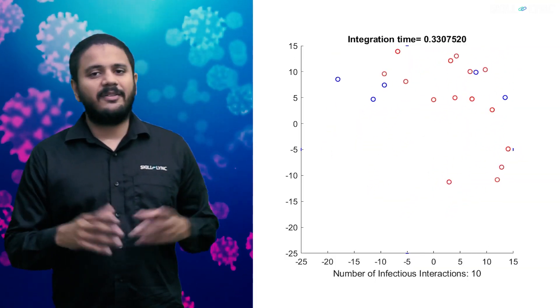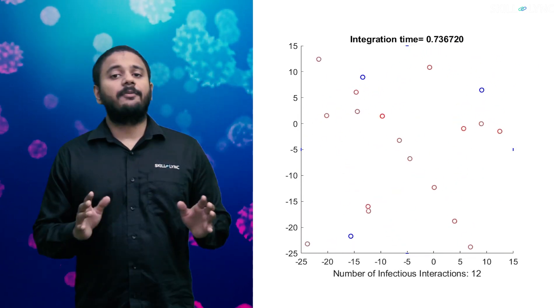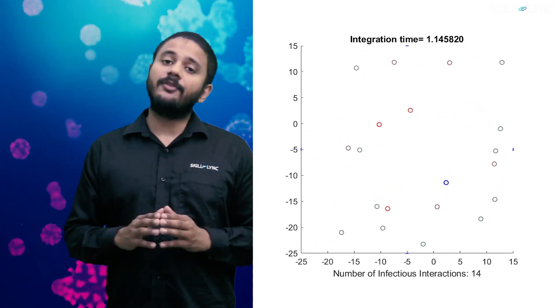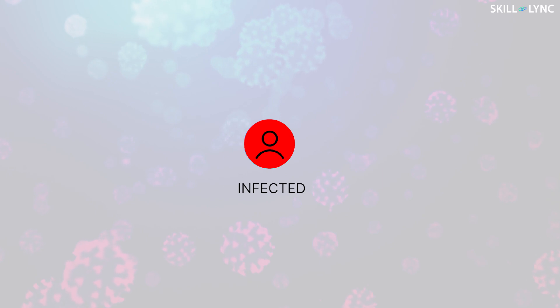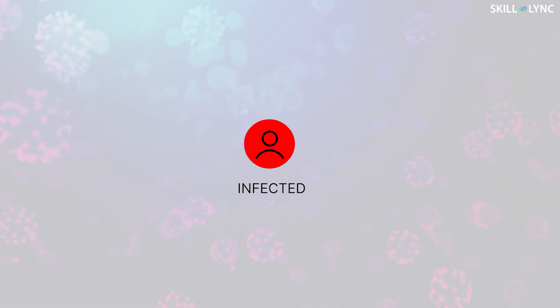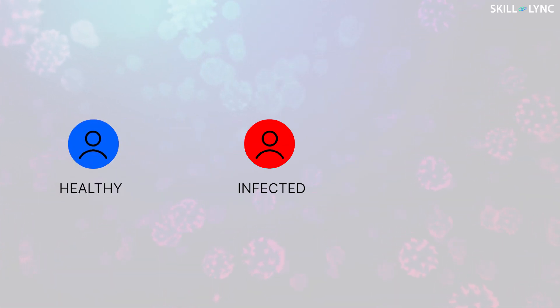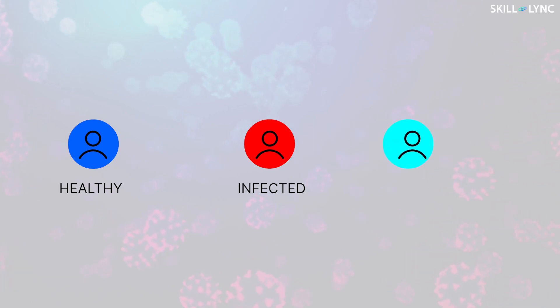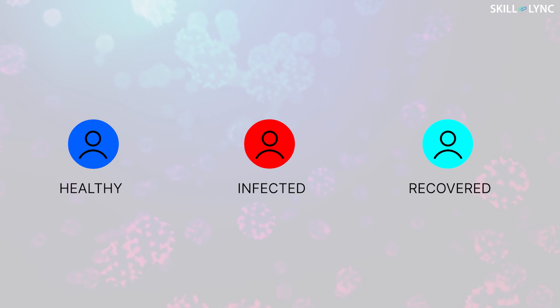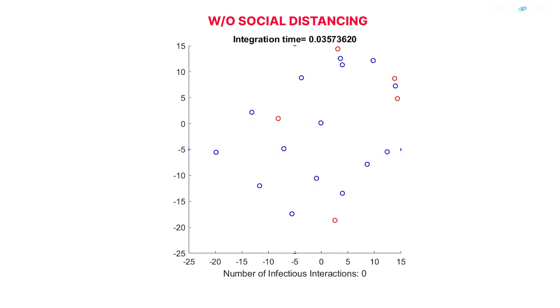Hey guys, hope you're all doing good and welcome to a new video. In this video we are going to show you the benefits of social distancing by performing simple particle simulations. You will be watching simulations where red colored circles represent people with coronavirus infection, blue colored circles represent healthy individuals, and cyan colored circles represent people who have recovered from an infection.